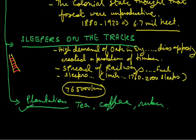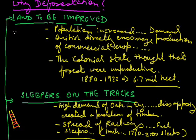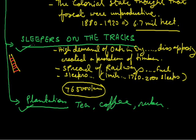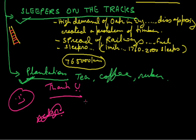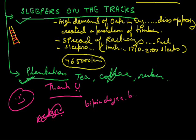So this is how, if we see the topic of why deforestation — deforestation happened because of land being improved for agriculture, deforestation happened because of the establishment of transportation, and deforestation happened because of plantation also. This is how we complete the first part of the chapter, that is the Forest Society and Colonialism. I hope it is clear in your mind. If not, you can send your doubt or problem to my blog, which is vipindogra.blogspot.in. Thank you.